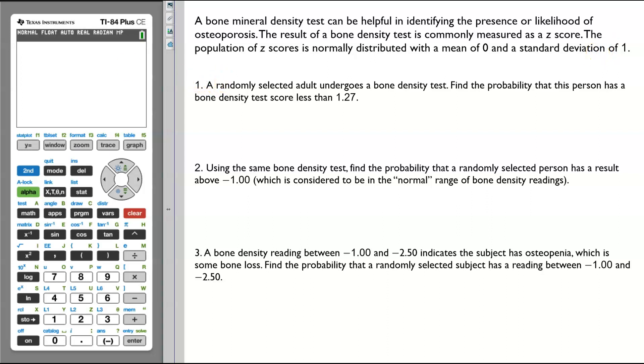Part 1. A randomly selected adult undergoes a bone density test. Find the probability that this person has a bone density test score less than 1.27.